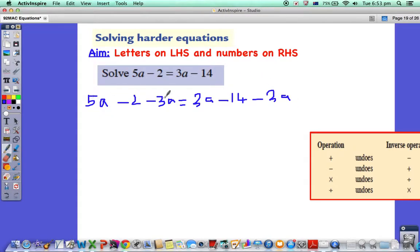Let's collect the terms. 5a minus 3a is 2a. So 2a minus 2 equals 3a minus 3a. They cancel out, so it's minus 14.